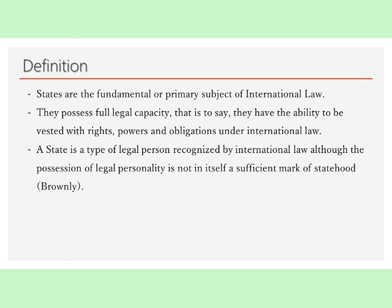The definition of a state under international law is not clear because quite often it is difficult to decide whether a particular entity is or is not a state. Brownlee says that a state is a type of legal person recognized by international law, although the possession of legal personality is not in itself a sufficient mark of statehood. However, he states that the criteria of statehood are laid down by the law, because if it were not so, statehood would be subjective such that a state would be able to contract out of duties owed to another state simply by refusing to characterize the obligee as a state. He does not, however, state what a state is but proceeds to look at the characteristics of statehood.